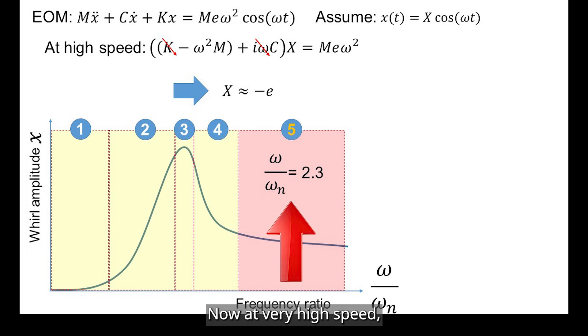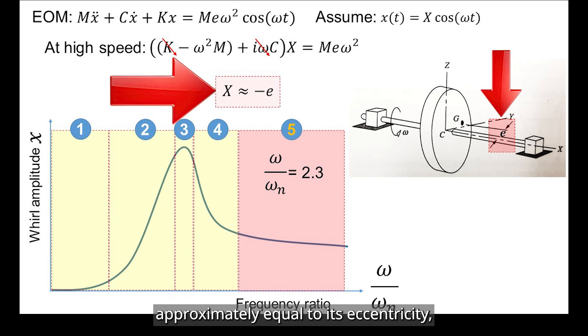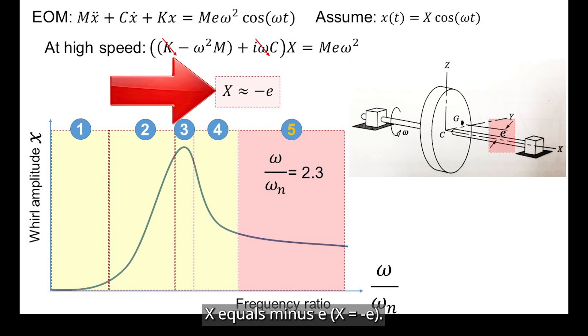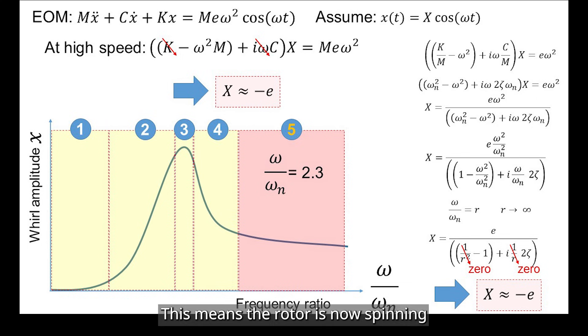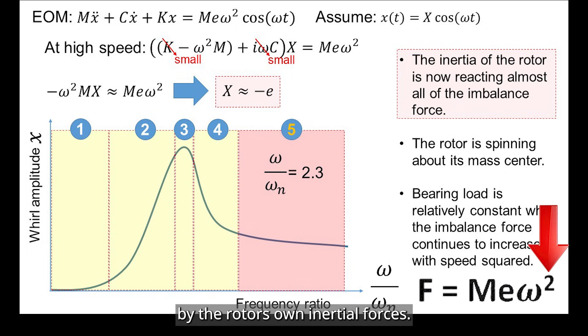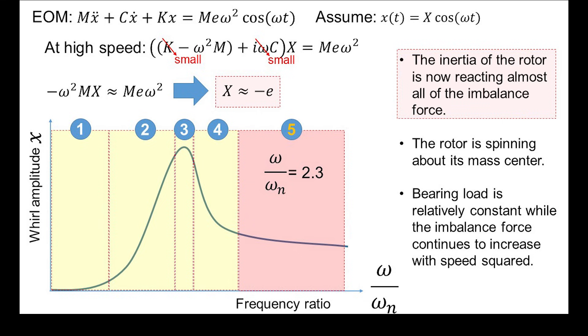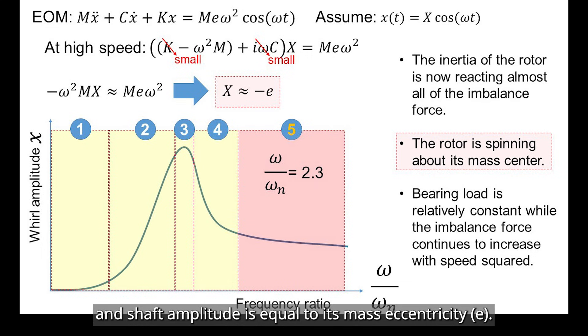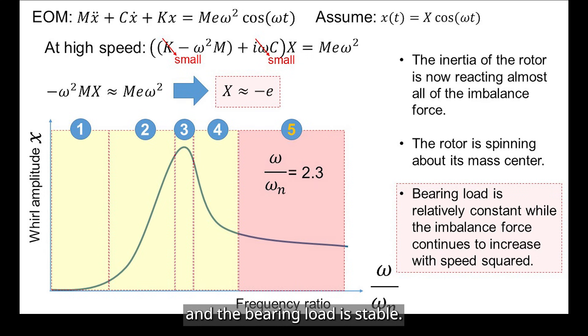Now, at very high speeds, say frequency ratio of 2.3, a unique thing happens. The rotor's amplitude becomes approximately equal to its eccentricity, and the simplified equation becomes X equals minus E. This means the rotor is now spinning about its mass center, and most of the imbalance force is now being handled by the rotor's own inertial forces. The key takeaway at this speed is that rotor spins about mass center, and shaft amplitude is equal to its mass eccentricity, and the bearing load is stable, but the imbalance force continues to grow with speed.